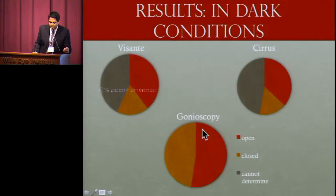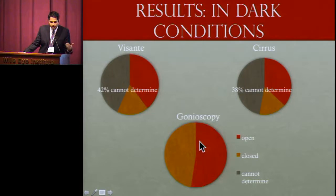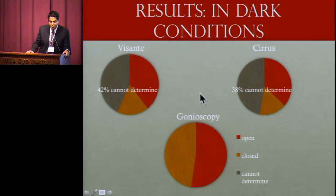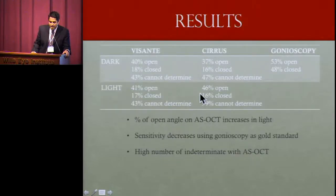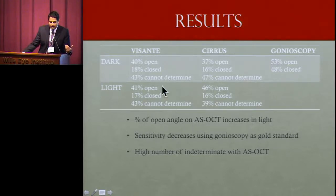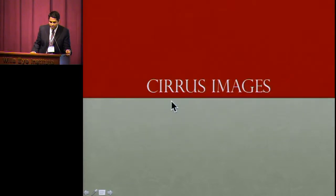Looking at the imaging results for Visante and Cirrus versus gonioscopy: gonioscopy determined angles as either open or closed in basically an even split. But with Visante and Cirrus, a high percentage could not be determined — 42% in Visante and 38% in Cirrus. The percentage of open angles on ASOCT increases in light conditions, but over 40% of images could not be determined.